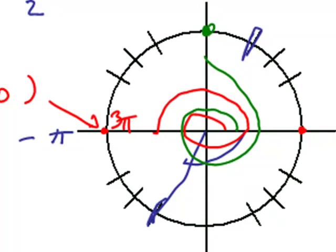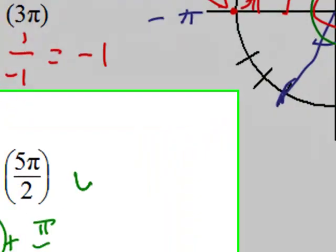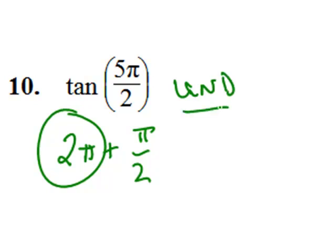An extra pi over two takes us to this point right here, which might also be considered at 90 degrees. The tangent at 90 degrees, the tangent at pi over two, is undefined. So I'll just write that undefined.